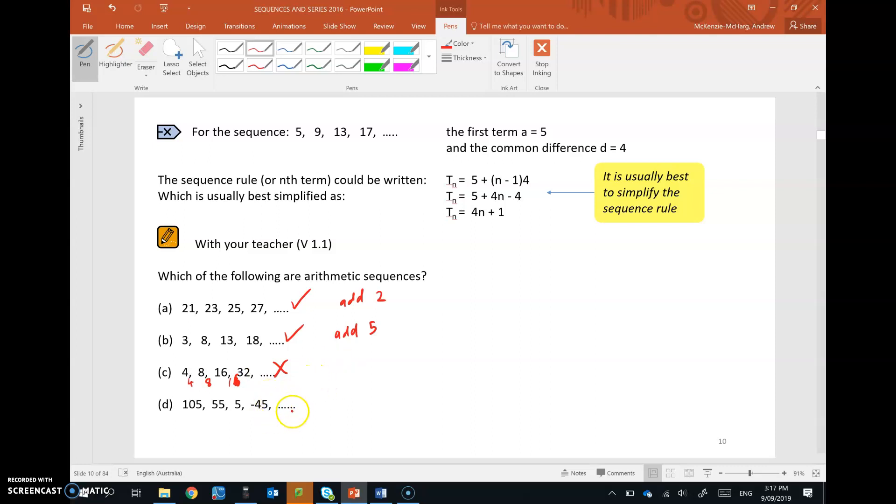Now, this one here, this last one, is a bit different. It is an arithmetic sequence, but we're taking 50 each time. So we're going down by the same value. That's still an arithmetic sequence. So that's how we identify arithmetic sequences.